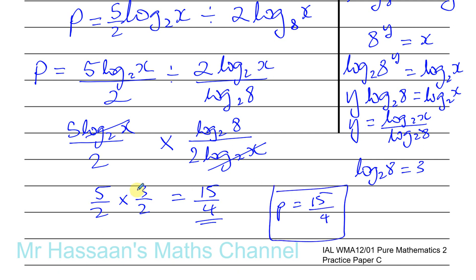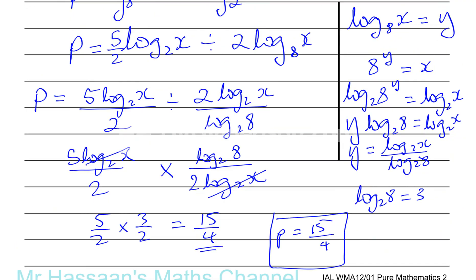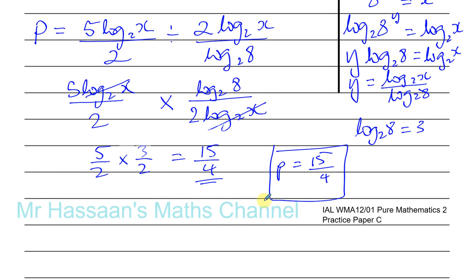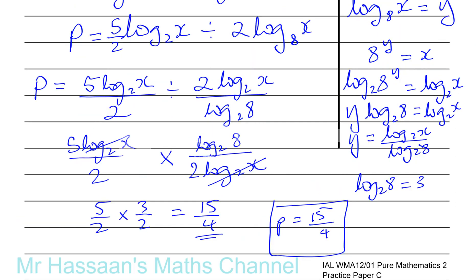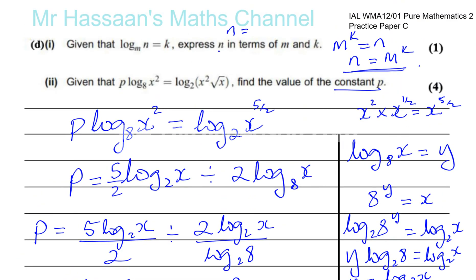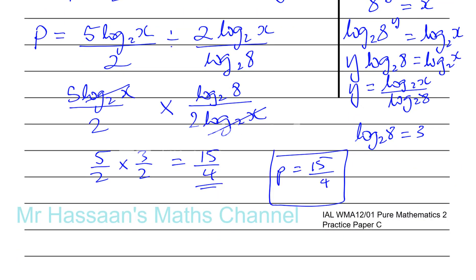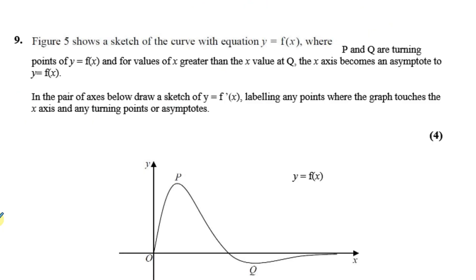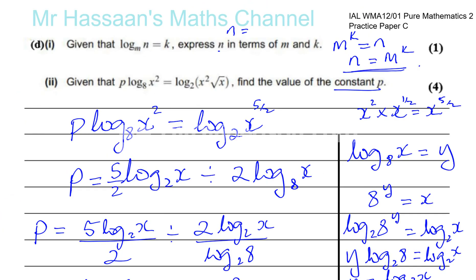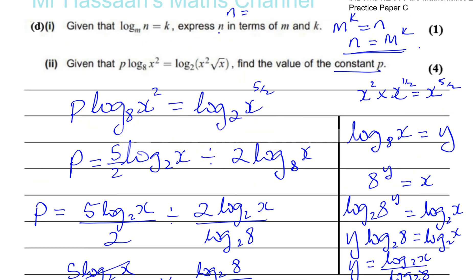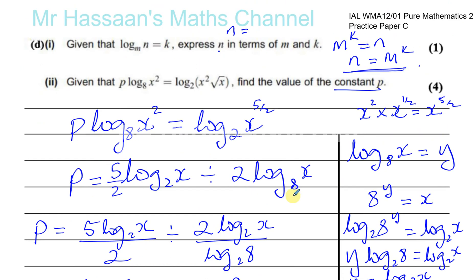So p equals 15 over 4 — that's our answer for part d(ii), and that's the end of this question. The next question is number 9, which I'll do in a minute. Thank you for watching.